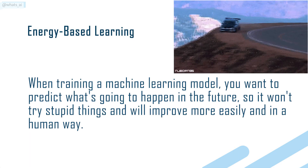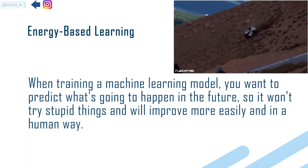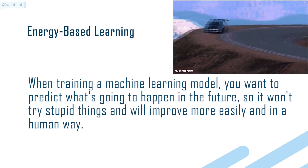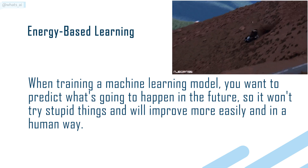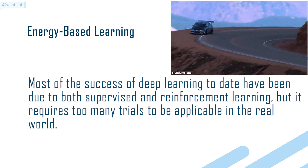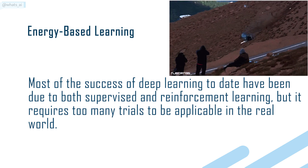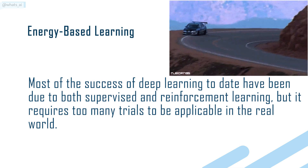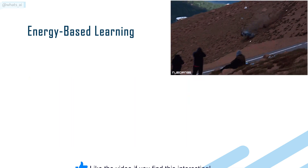When training a machine learning model, you want to predict what's going to happen in the future, so it won't try stupid things and will improve more easily in a human way. Most of the successes of deep learning to date have been due to both supervised and reinforcement learning, but it requires too many trials to be applicable in the real world.